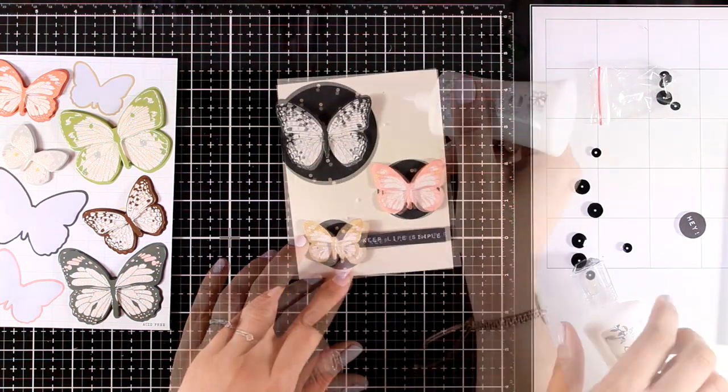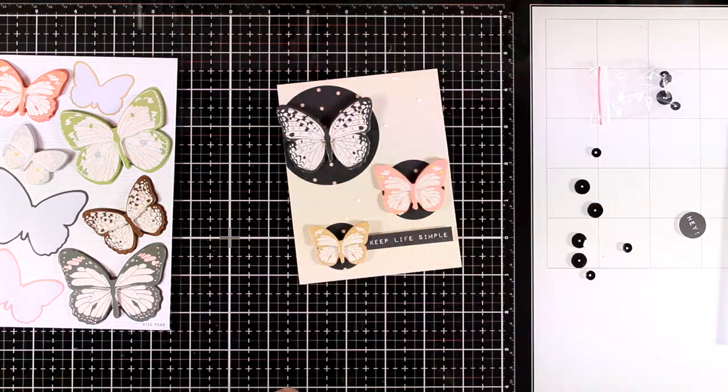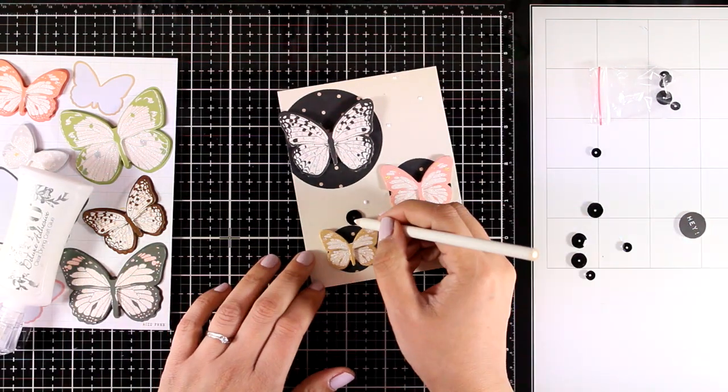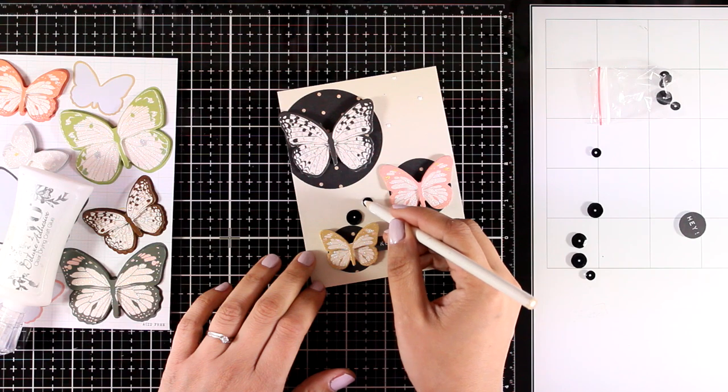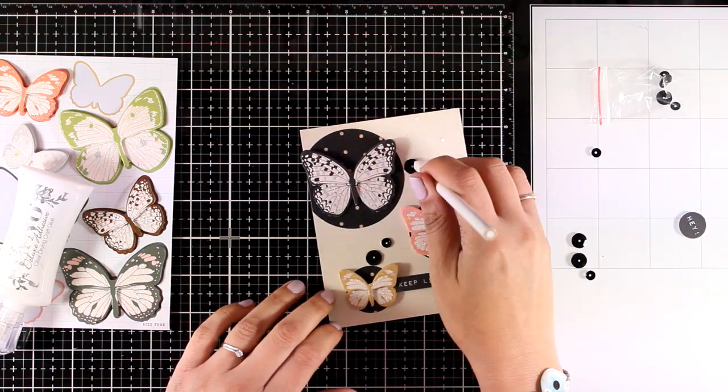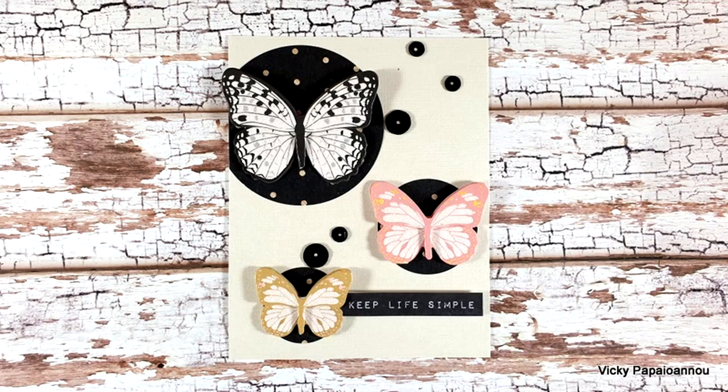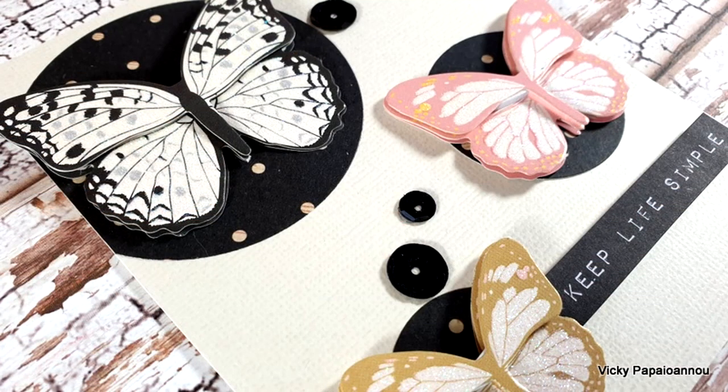And I'm going to embellish the whole card with some of the black sequins included in the kit. And another thing that I need to mention about these butterflies is that they actually have glitter on top, which is really hard to catch on camera. This is a very simple and quick card to make, but it looks really stunning.